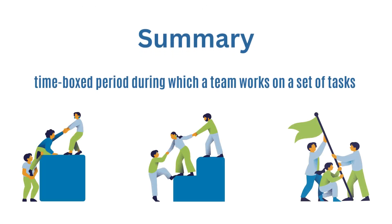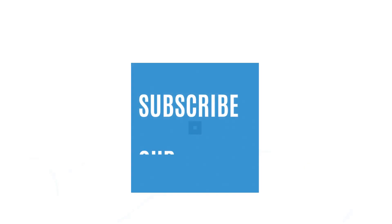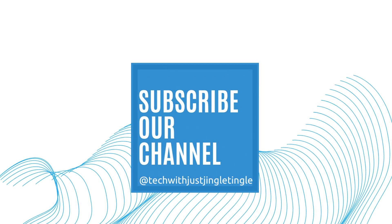So, in summary, a sprint in Jira is a time-boxed period during which a team of developers works on a set of tasks to deliver a working increment of software. It's a way to help teams plan and deliver software more efficiently. That's it for this video.